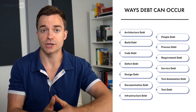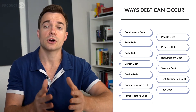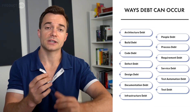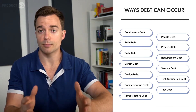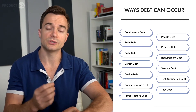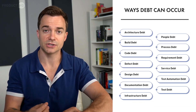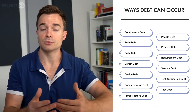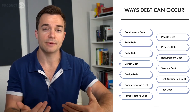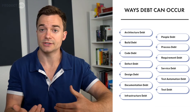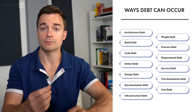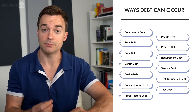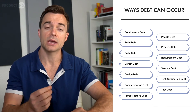The first is architecture debt, which deals with issues in the project's architecture that ultimately affect performance and robustness, and is rarely ever solved with simple interventions. Build debt refers to problems that make the build more difficult because they take more time and resources than necessary. Code debt deals with problems in the source code that negatively affect the code's legibility, making it more difficult to maintain.